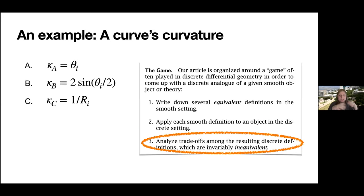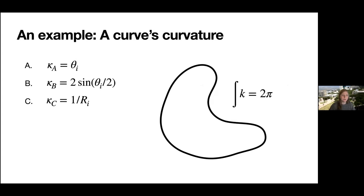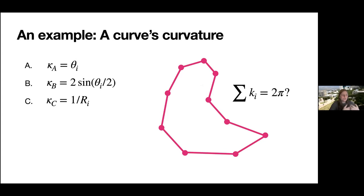Let's move to the best part of the game. We take these analytically equivalent definitions, discretize them, and see how different they are. Let's think about some properties we'd want our discrete curvature to have. One is the Gauss-Bonnet theorem: a simple closed curve has the integral of its curvature equal to 2π. We'd like our discrete curvature to sum to 2π on a closed simple polyline. Surprisingly, this is only true for the turning angle definition — you can probably see why, since summing the angles of a polyline gives 2π. But it's not true for the other two, which is pretty fascinating.